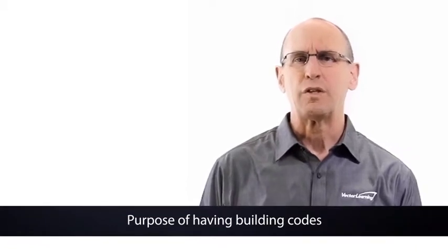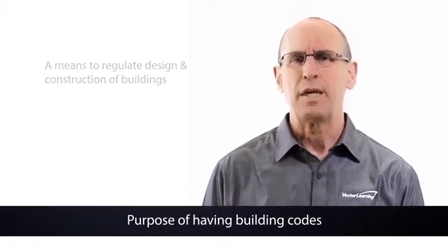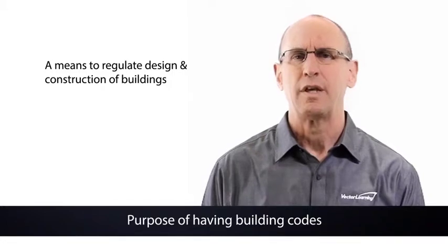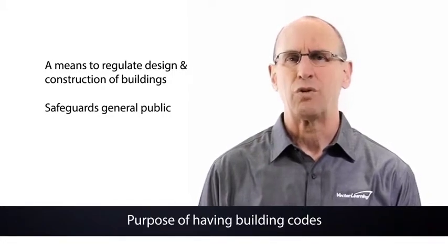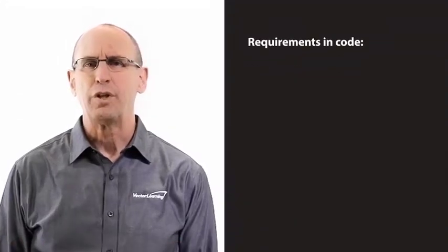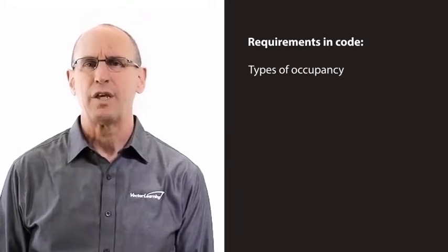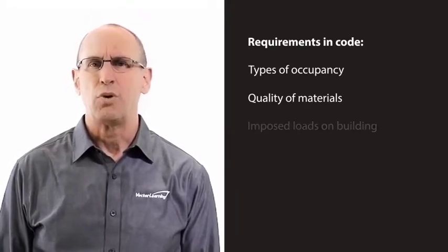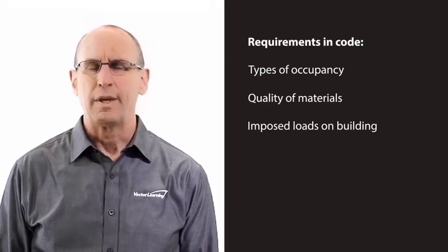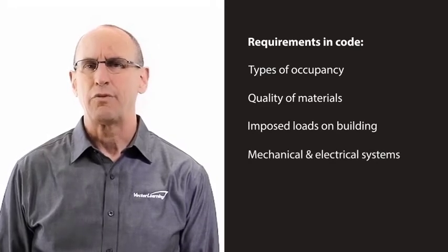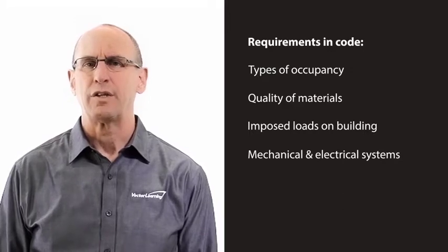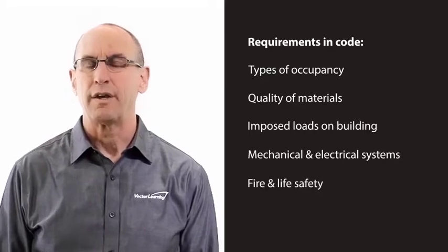If we consider the purpose of building codes, it's basically a means to regulate the design and construction of buildings in a manner that safeguards the general public. Some of the requirements included in the code are types of occupancy, quality of materials, imposed loads on the building, mechanical and electrical systems, and other special emphasis parameters such as fire and life safety.